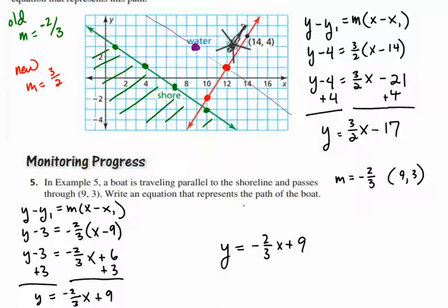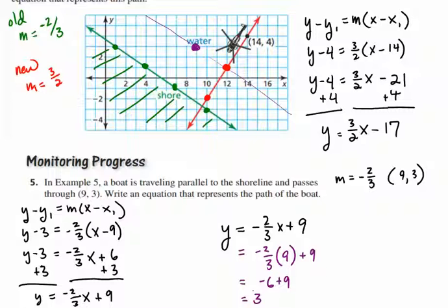If we were to check the new equation, when your x value is 9, what would your y value be? And so, here we have negative 2 thirds times 9. That's negative 18 over 3 is negative 6 plus 9. It says my y value would be 3 when my x value is 9. So, we have the point 9 comma 3, and that's the point that we want to pass through.